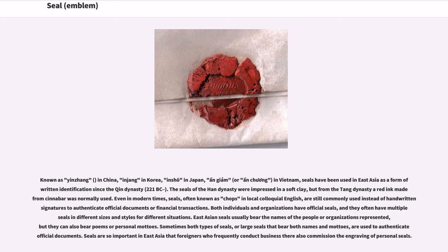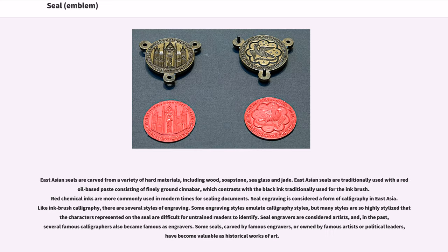Seals are so important in East Asia that foreigners who frequently conduct business there also commission the engraving of personal seals. East Asian seals are carved from a variety of hard materials, including wood, soapstone, sea glass and jade. They are traditionally used with a red oil-based paste consisting of finely ground cinnabar, which contrasts with the black ink traditionally used for the ink brush.